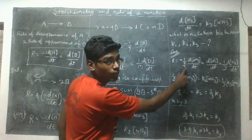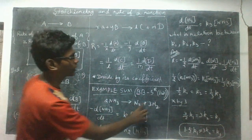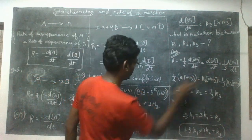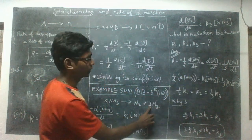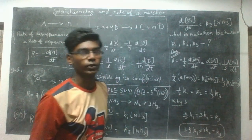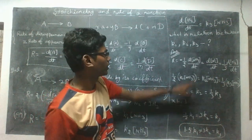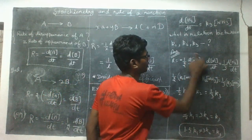So, 1 by 2. If we are looking at the coefficient, this is 1/2. We have 3, so we have 1/3. Let's see, we have the information.